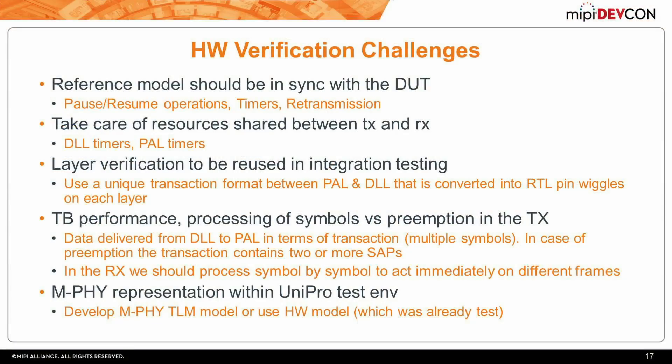There are important things to consider in hardware verification. The first is synchronization between the reference model and the DUT — it's very easy for the reference model to get out of sync from what the DUT is doing. For example, in retransmission scenarios, the reference model may have sent something while the DUT was still in process and received a NAK frame, causing the DUT to cut the transmission while the reference model already transmitted it. It's also important to take care of shared resources like timers in the data link and PAL layers, where you might be transmitting something and receiving something that should stop the timer at the same time — the race between the two events must be handled carefully.